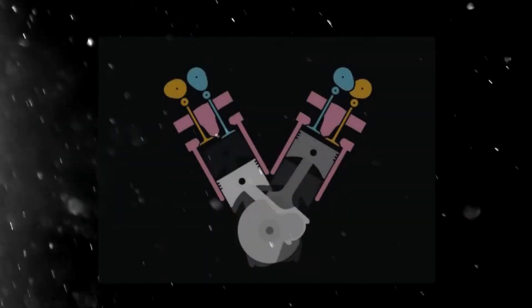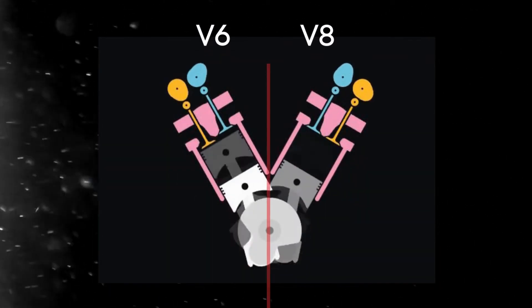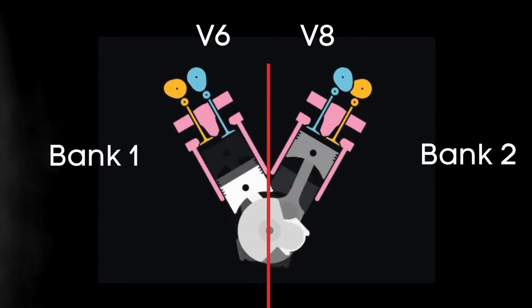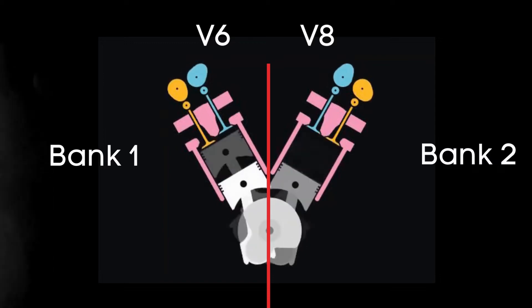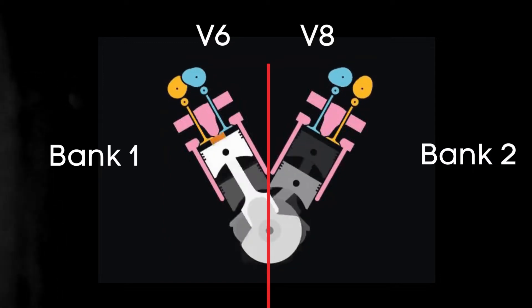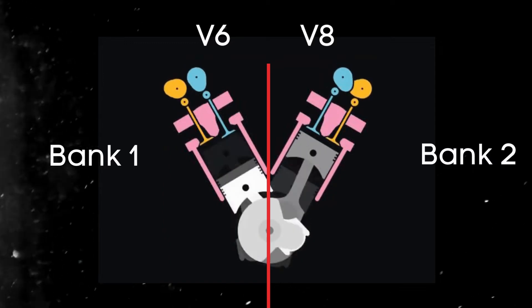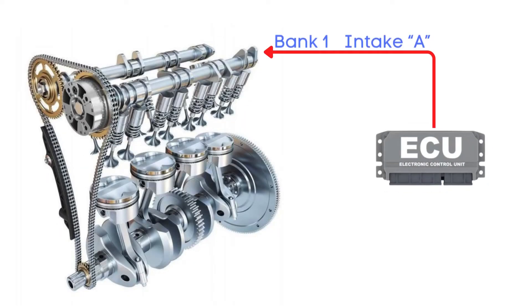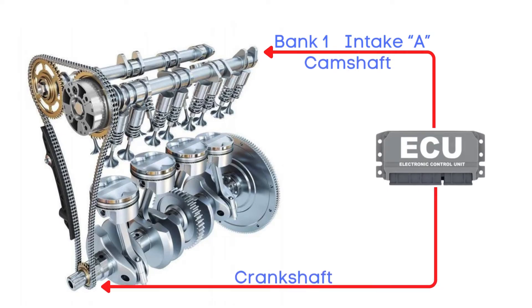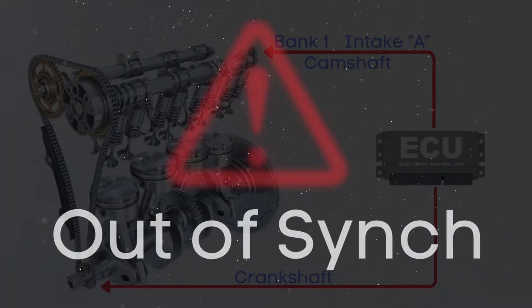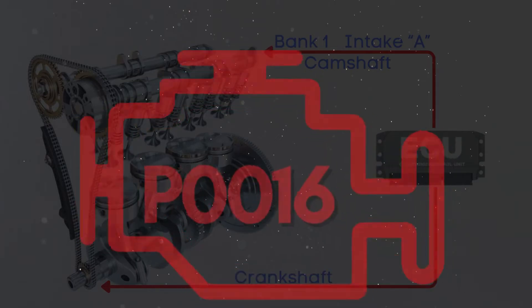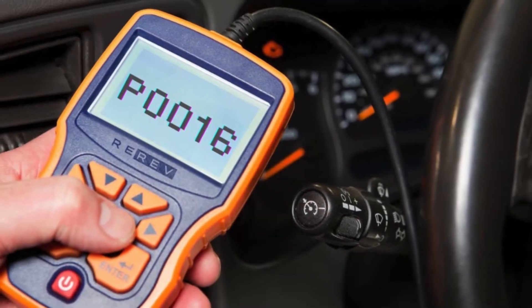In the case of V-6 or V-8 engines, there are two camshafts: bank 1 and bank 2. For dual overhead camshaft (DOHC) engines, there are two camshafts per bank — intake and exhaust. When the ECU detects that the bank 1 intake camshaft position and crankshaft position are out of sync by a specific degree, it triggers the P0016 code. Now that we know what P0016 means, let's find out how to fix it.